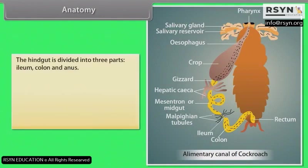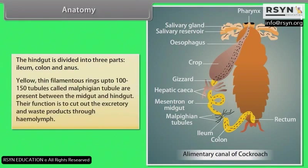The midgut and hindgut are long tubules, with the hindgut wider than the midgut. The hindgut is divided into three parts: ileum, colon and anus. Yellow thin filamentous Malpighian tubules, up to 100–150 in number, are present between the midgut and hindgut. Their function is to remove excretory and waste products through haemolymph.